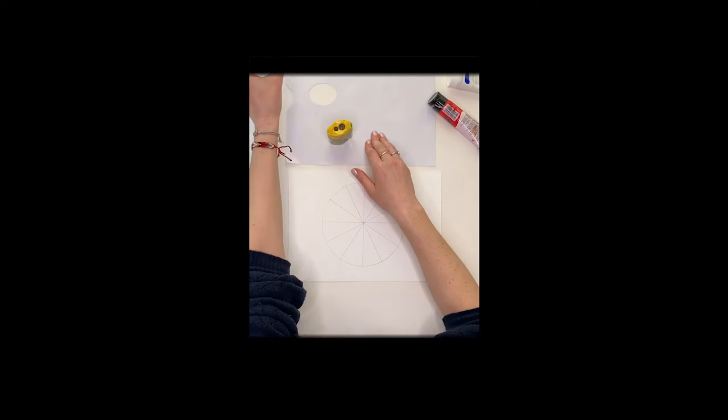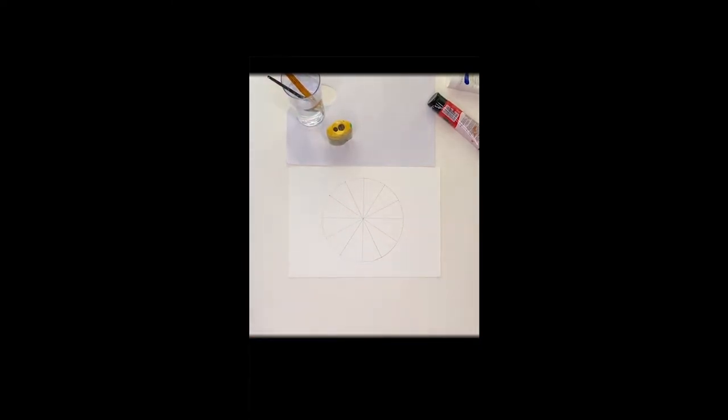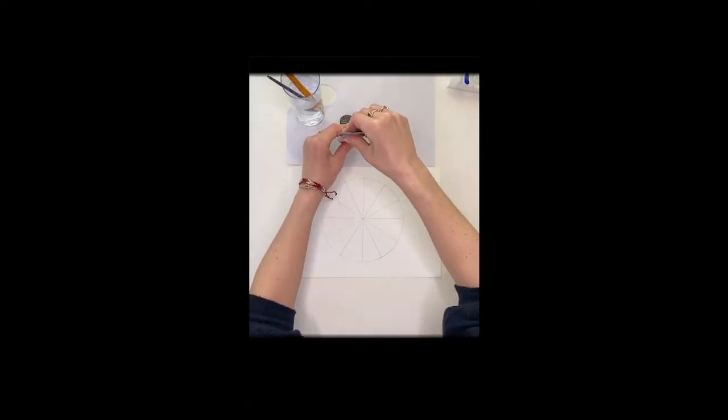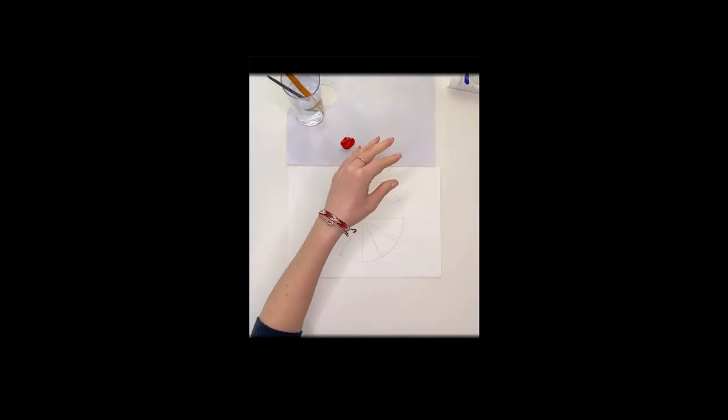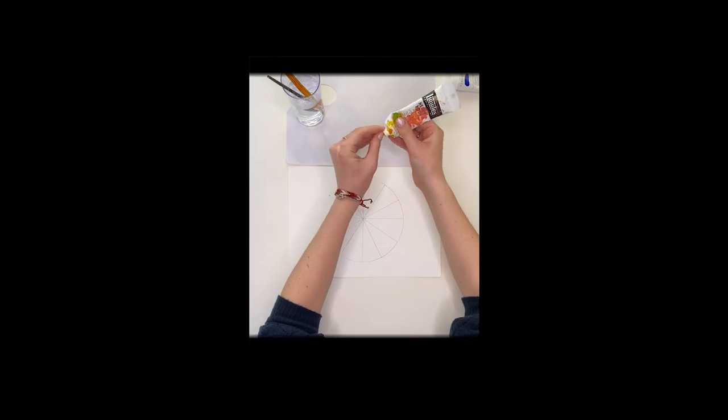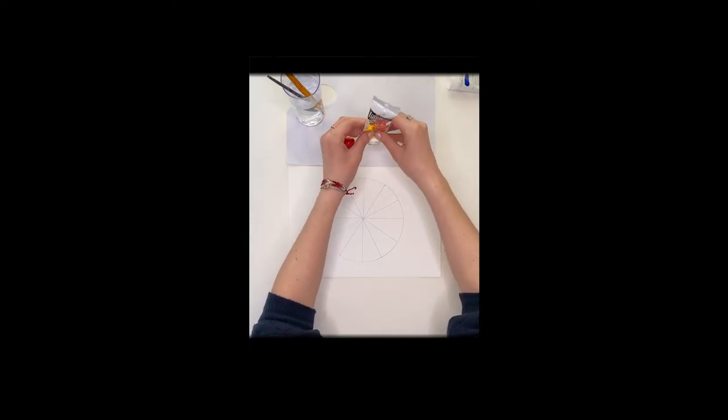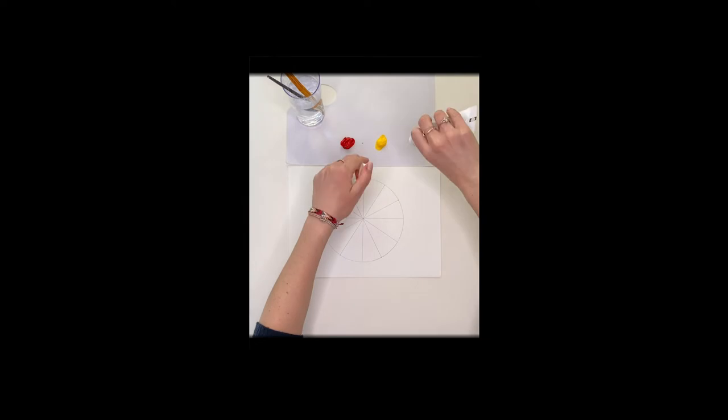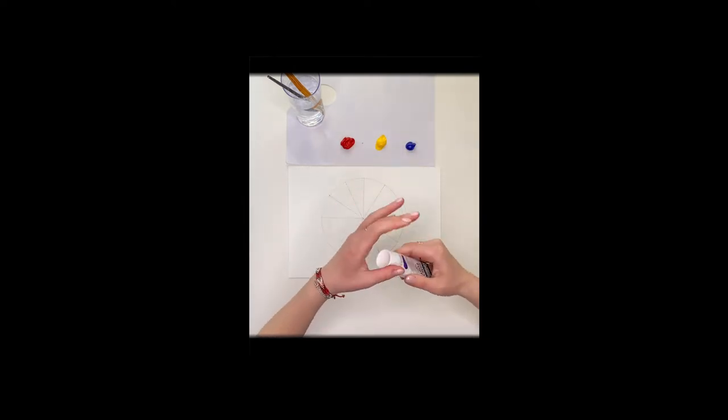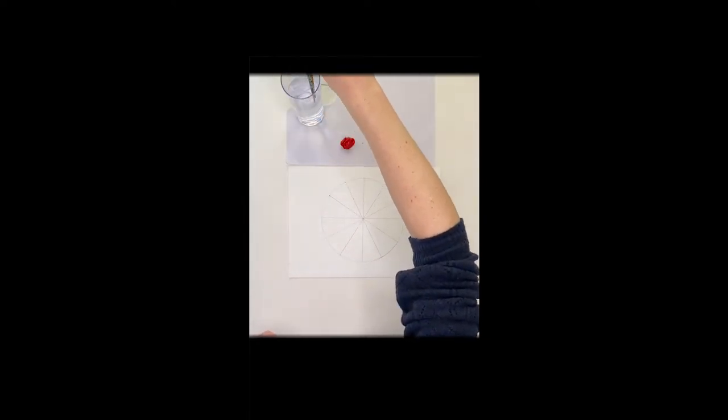Put down your red, your yellow, and your blue acrylic paint onto your palette. Make sure you've got quite a large amount because we're going to be mixing it and going through it. Take your paintbrush and take the first bit of color out. And we're going to start painting our first segment.